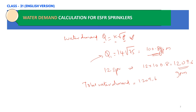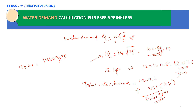To select the fire pump, we need to add the hose stream allowance of 250 GPM to the sprinkler demand of 1209.6 GPM, giving a total water demand of approximately 1460 GPM. The duration is 60 minutes, so the water tank capacity = 1460 × 60 = 87,600 gallons.